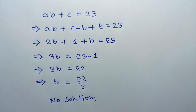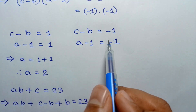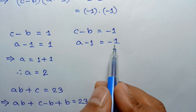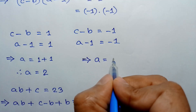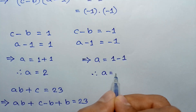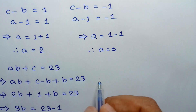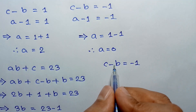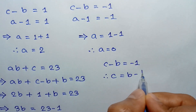For the second case, C minus B equals negative 1 and A minus 1 equals negative 1. Taking negative 1 to the right side, A equals 1 minus 1, so A equals 0. From C minus B equals negative 1, taking negative B to the right side, we get C equals B minus 1.